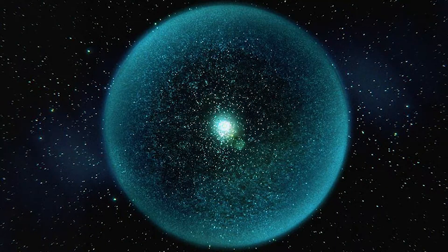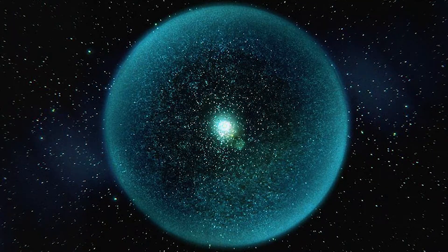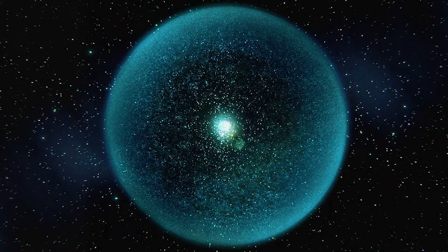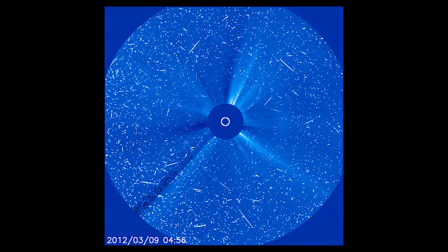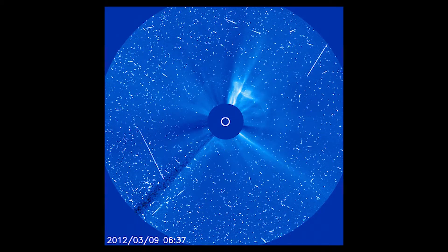The Oort Cloud is not a specific fact but a theory to explain where comets come from. We don't have any direct observations or evidence yet, but comets coming from all directions would be hard to explain otherwise.